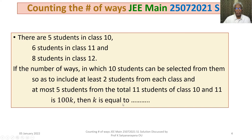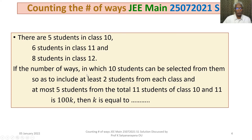We have to select 10 students such that at least 2 students are from each class and at most 5 students from class 10 and 11 combined. If the number of ways of doing such selections is 100k, then k is equal to what?